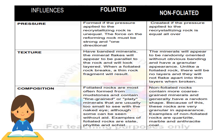The composition of rocks also affects whether the metamorphic rock will be foliated or non-foliated. Foliated rocks are most often formed from mudstones and contain fine-grained or platy minerals that are usually too small to see with the naked eye, although some can be seen without aid. Examples of foliated rocks are slate, phyllite, and schist. Non-foliated rocks contain more coarse-grained minerals and generally have a random shape, making them very granular in appearance. Examples of non-foliated rocks are quartzite, marble, and anthracite coal.